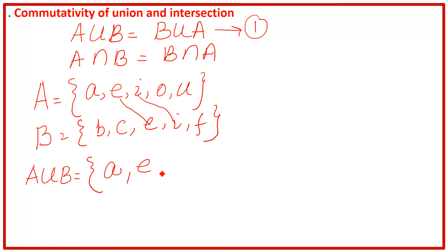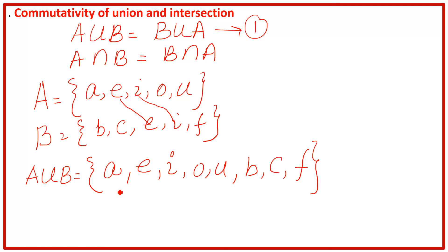I is present in both A and B, so we write it down only one time, and then O and U. Now for the elements from B: B, C, and F. So A union B contains each and every element of both sets, but common elements are written only once. This is the left-hand side. Now we are going to prove B union A.